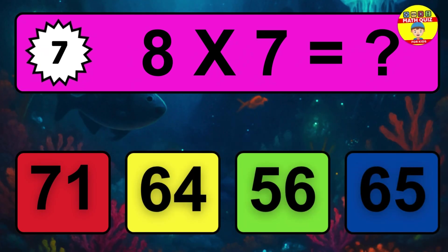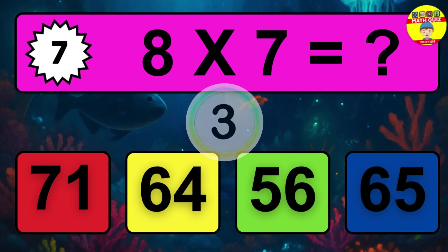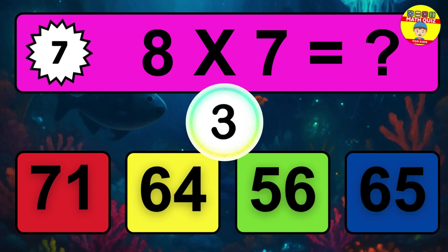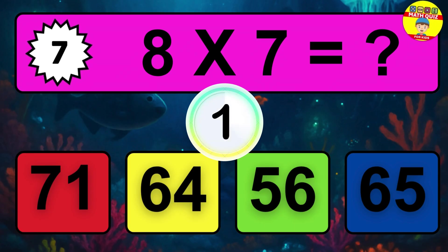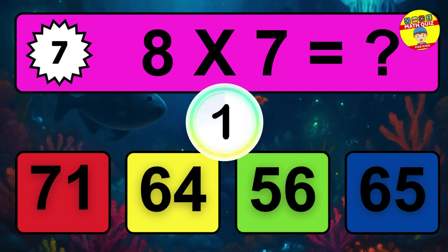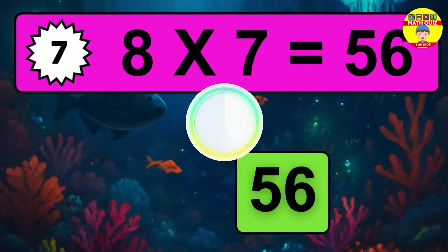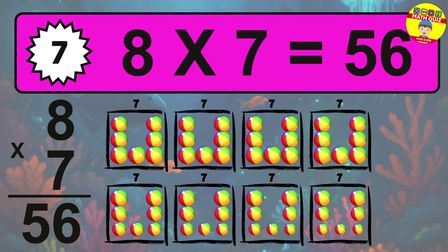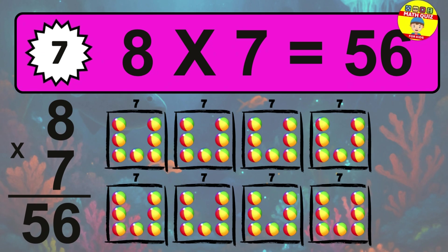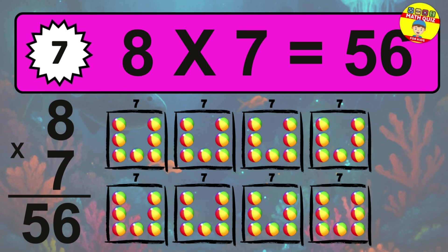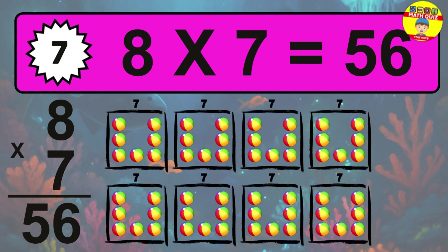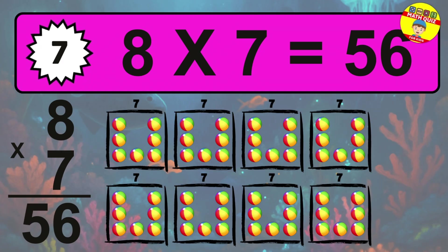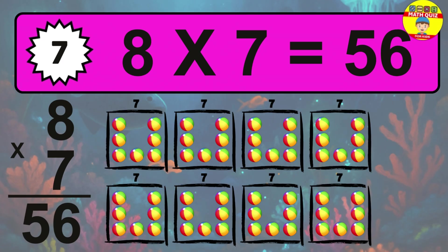Question 7. Eight times seven equals what? The answer is eight times seven is 56. To calculate, we have eight groups with seven balls each one. So how many balls do we have? Fifty-six balls.